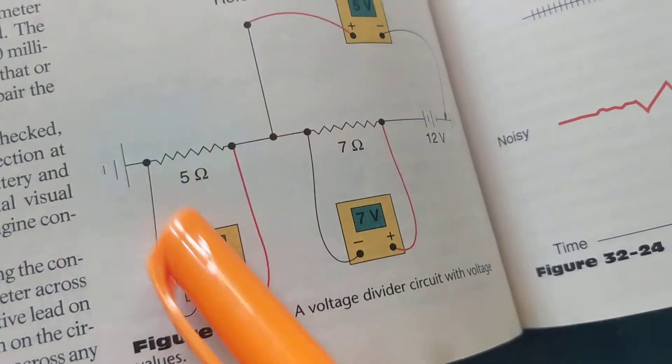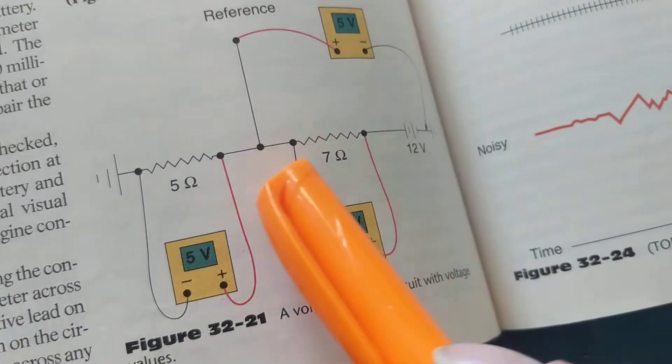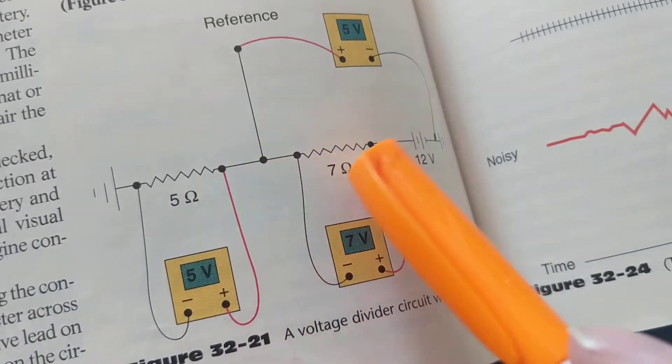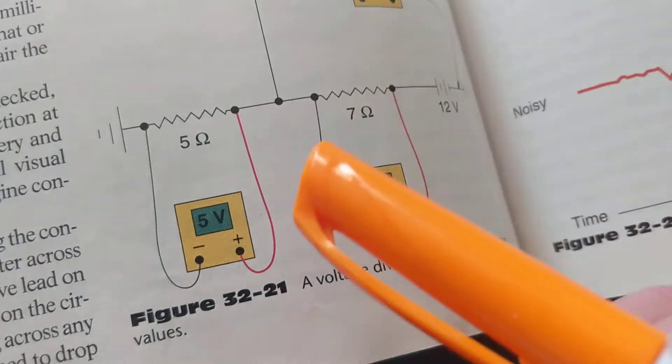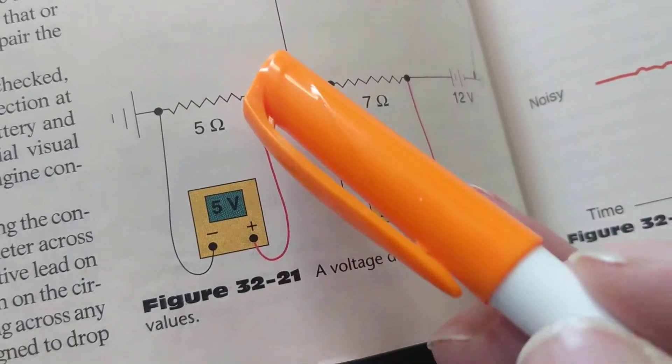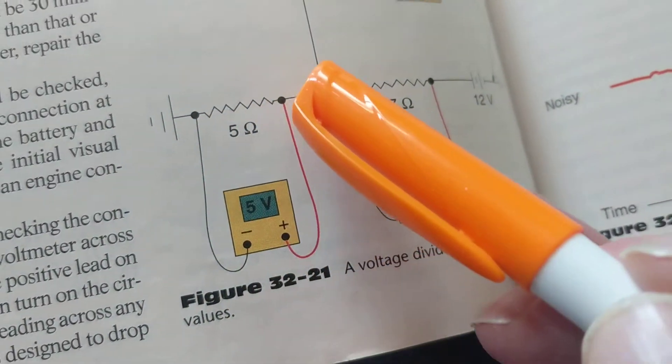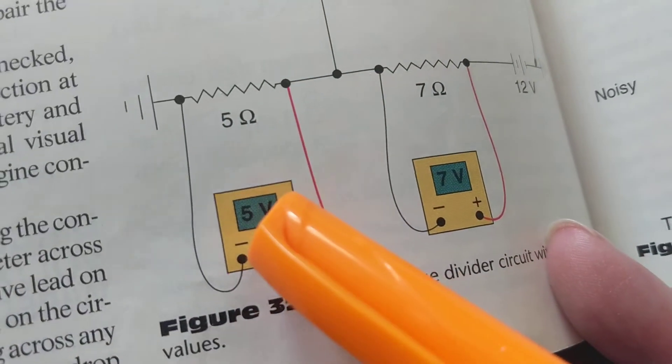If you measure across each one, notice the difference. I'm not going with respect to ground. I'm putting my meter, I will measure where? From ground on this one to the other side, which is 5 volts.